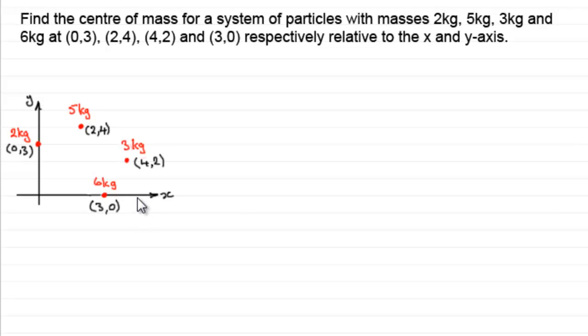To demonstrate how we work this out, we've got an example here where we've got four particles of mass 2kg, 5kg, 3kg and 6kg, and they're situated at these coordinates: (0,3), (2,4), (4,2) and (3,0).